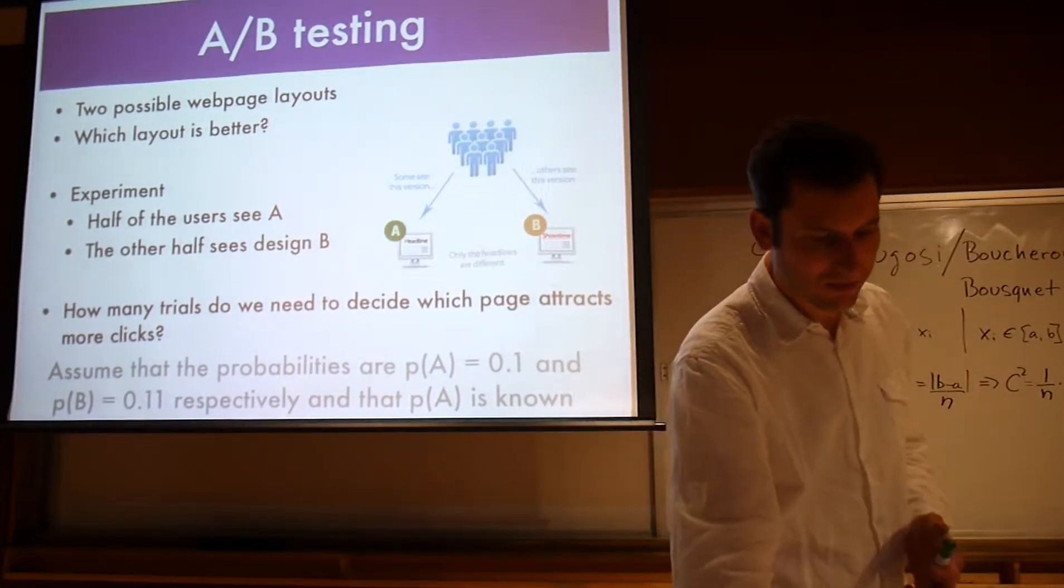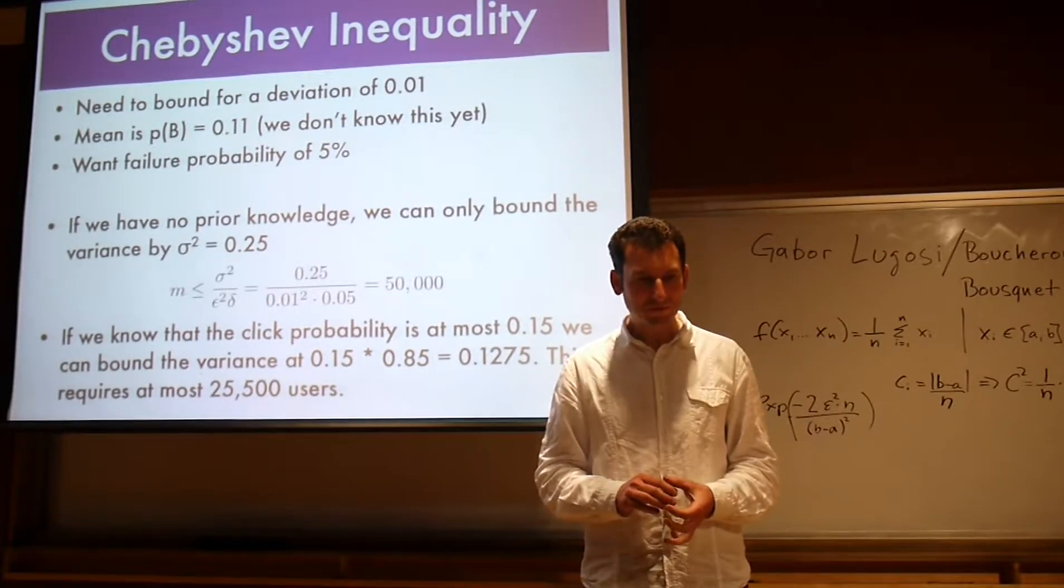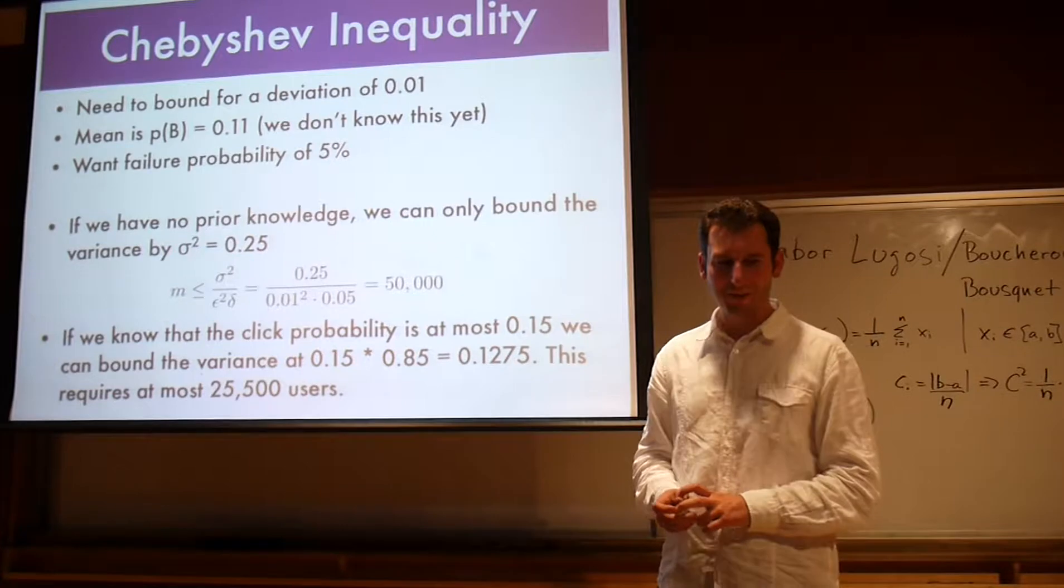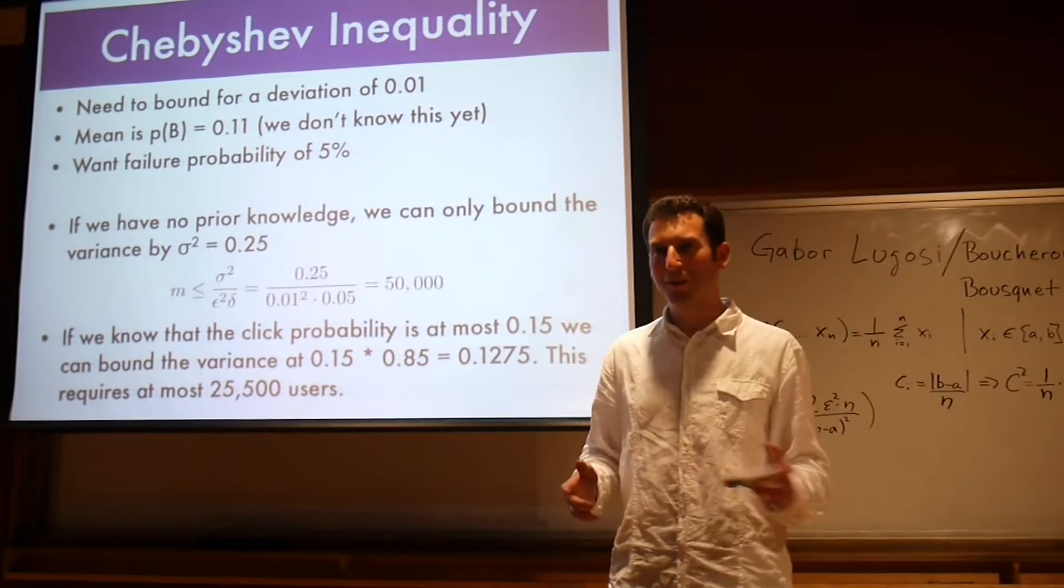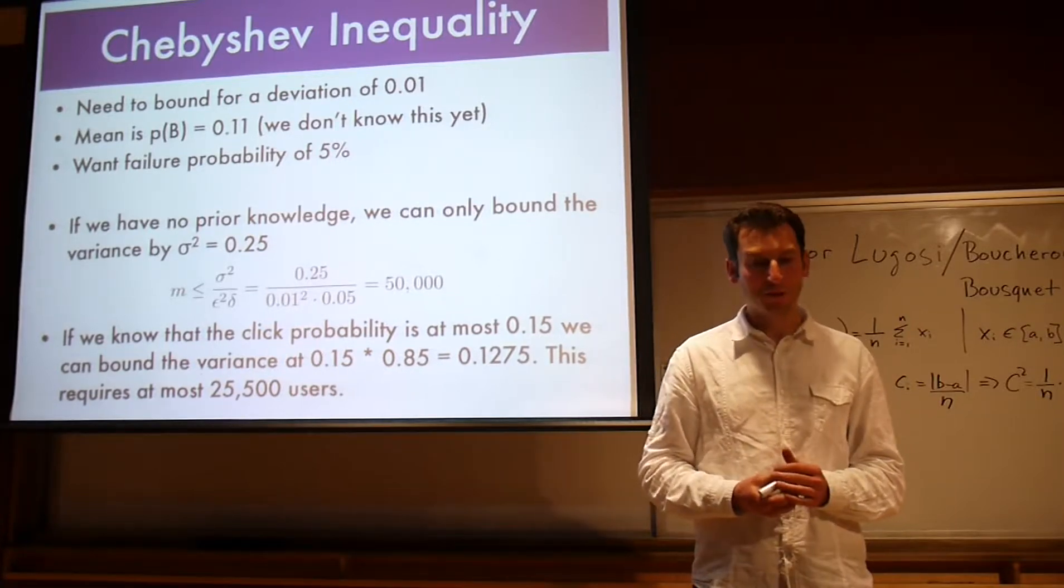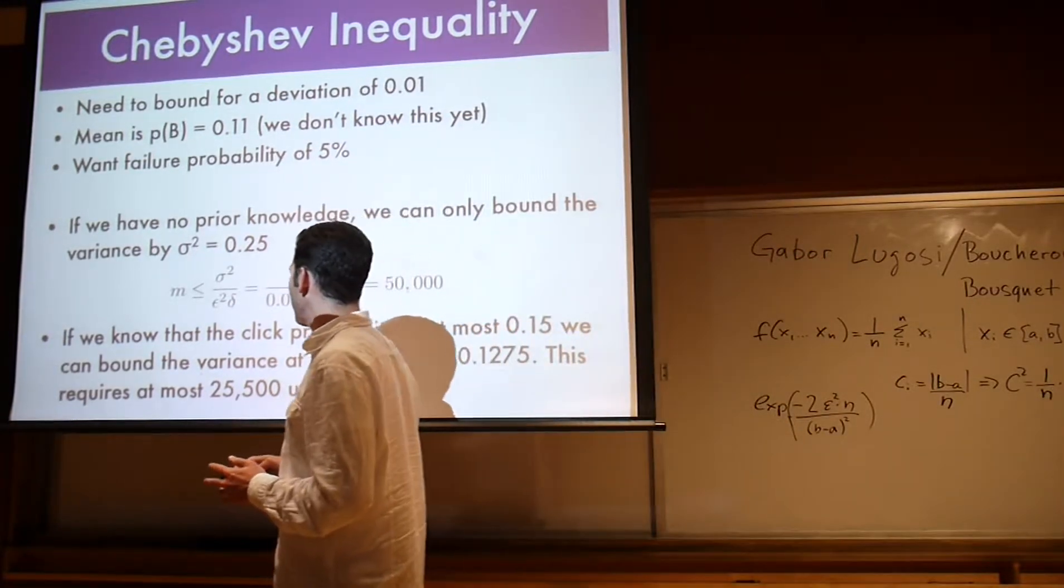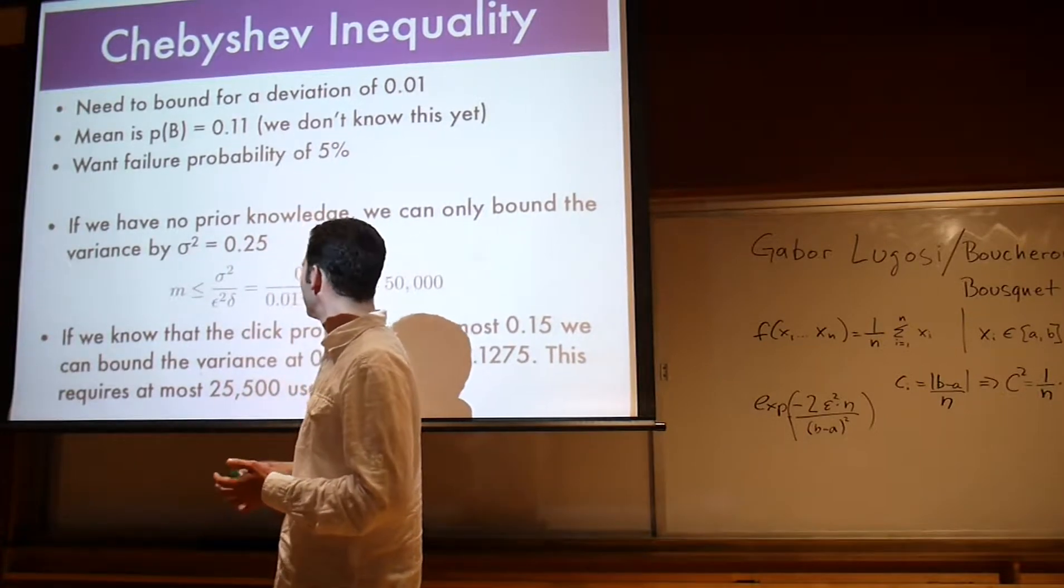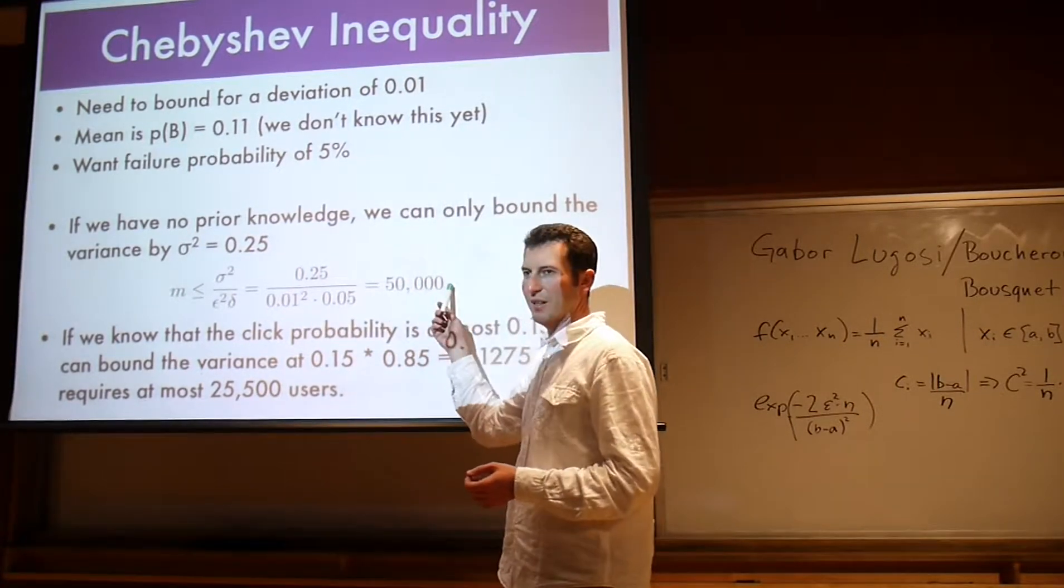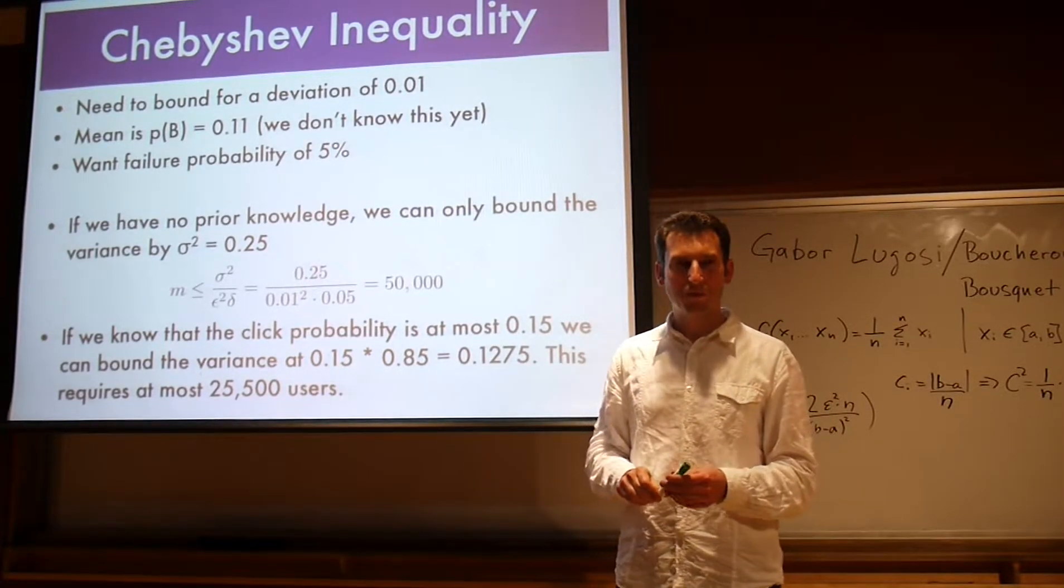Gauss-Markov doesn't really help us in this case, but the Chebyshev inequality might already give us something. We need to bound for a deviation of 0.01. The mean is p(B) = 0.11, but we don't really know this yet. We want to make sure that with only 5% probability we don't pick B. We have absolutely no prior knowledge about how good the system is. We can bound the variance, σ² = 0.25. We plug that in and we get that we need about 50,000 experiments until I can tell with sufficiently high confidence which of the two designs is better.